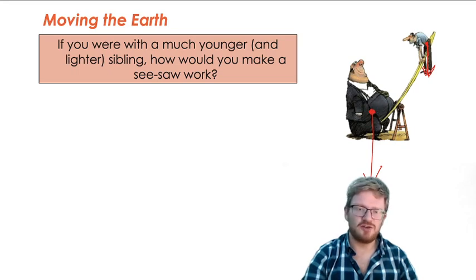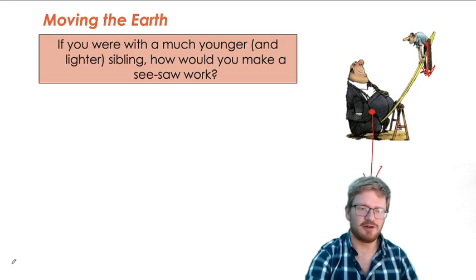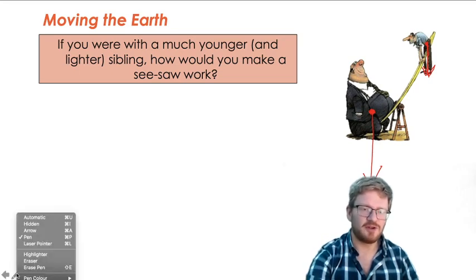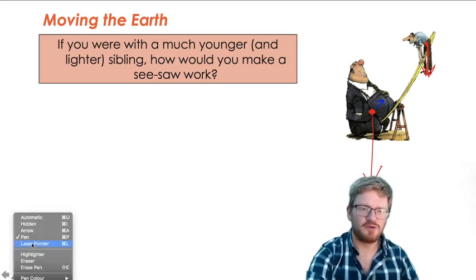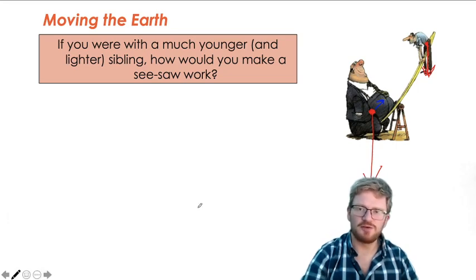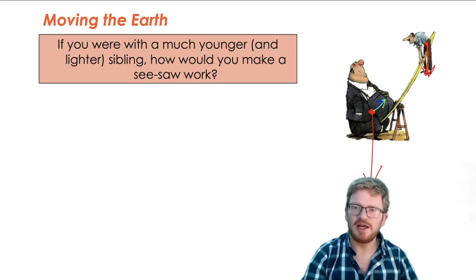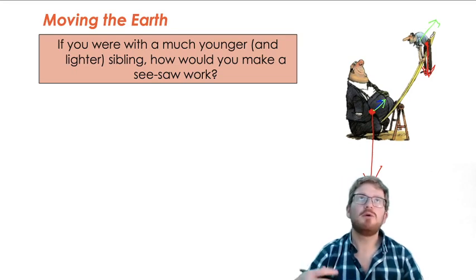Well, intuitively, what we'd need to do, and what you may have actually tried if you've ever been to the playground with a sibling, the way around it is you move the heavier person forward. We move the heavier person forward closer to the pivot point.